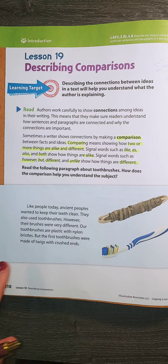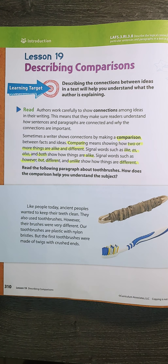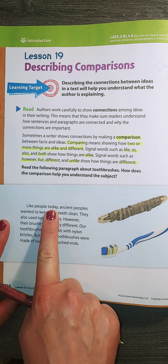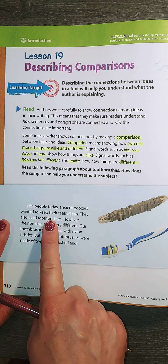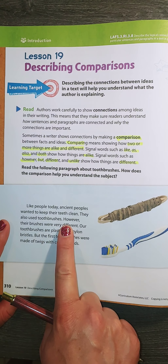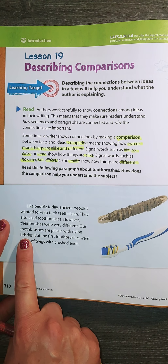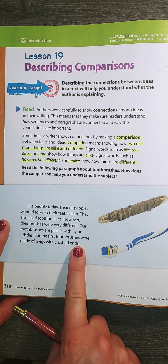We're going to read this little paragraph about toothbrushes. We're going to look for some signal words and then talk about why we are comparing those. Our paragraph says: Like people today, ancient peoples wanted to keep their teeth clean. They also used toothbrushes. However, their brushes were very different. Our toothbrushes are plastic with nylon bristles, but the first toothbrushes were made of twigs with crushed ends.